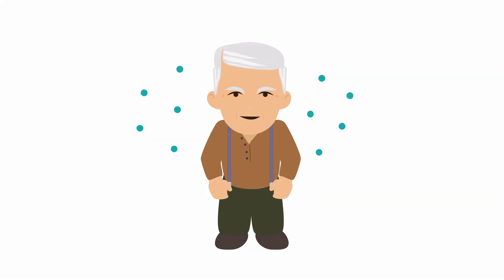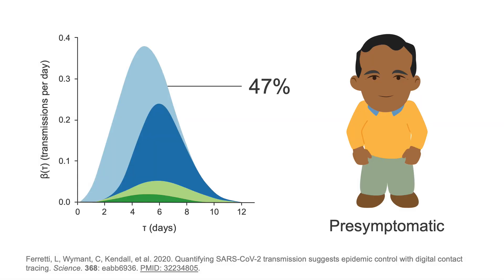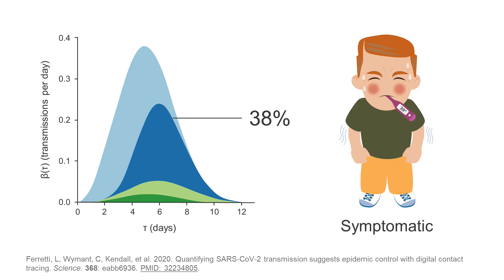Most of the time, infection starts when an uninfected person inhales virus-laden droplets or aerosol into their nose and throat. 47% of the time, transmission comes from a pre-symptomatic person through aerosol transmission or droplet inhalation. 38% of the time, it comes from a symptomatic person through aerosol transmission or droplet inhalation.